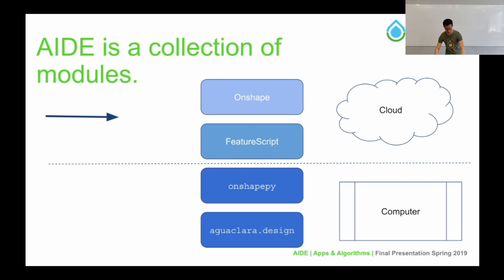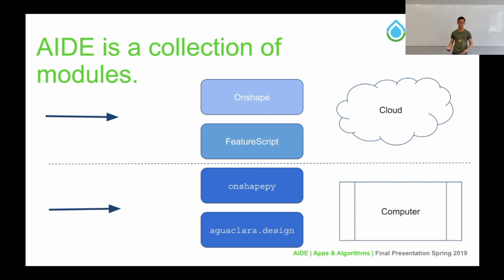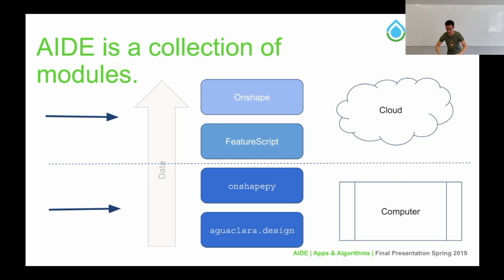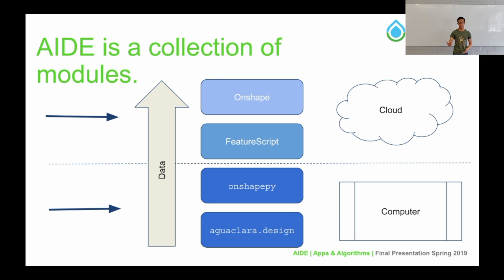On the user's computer, there are two important Python modules. One is OnshapePy, which allows us to pass data from the user's computer into Onshape 3D models. The other is Aguaclara Design, which allows us to calculate the changes between each water treatment plant design. Data processed in Aguaclara Design on the user's computer passes up to the cloud in Onshape, where it can then affect the 3D models of our water treatment plant designs.